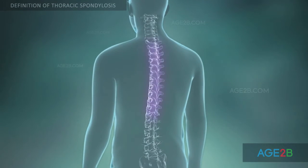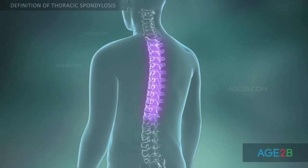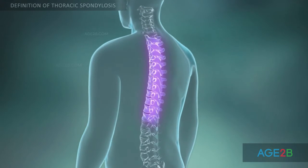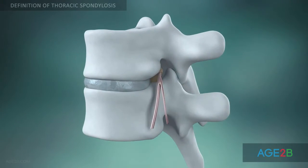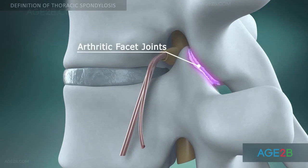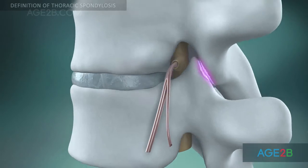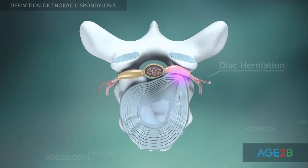Thoracic spondylosis is a degenerative condition of the thoracic region of the spine. This pathological condition can include facet joint osteoarthritis, formation of bone spurs, or disc herniation.